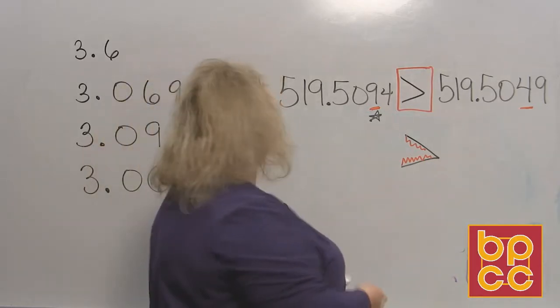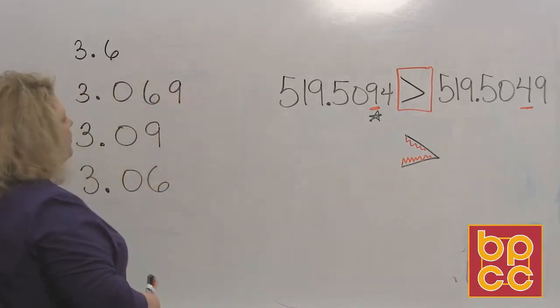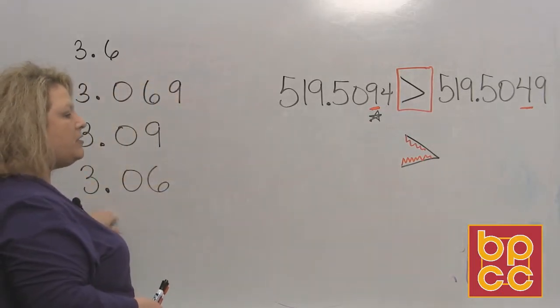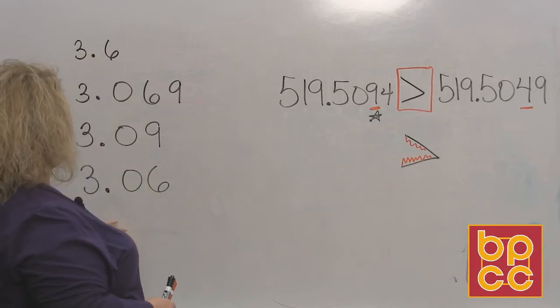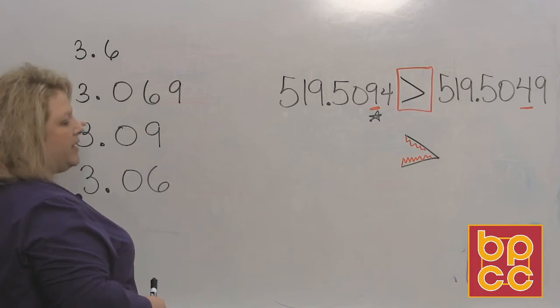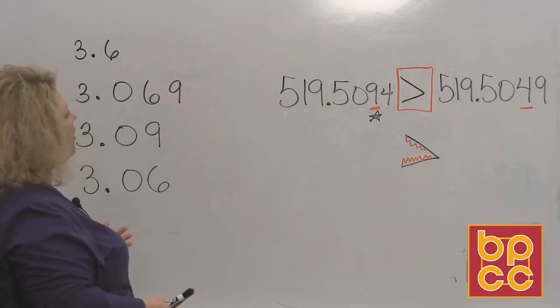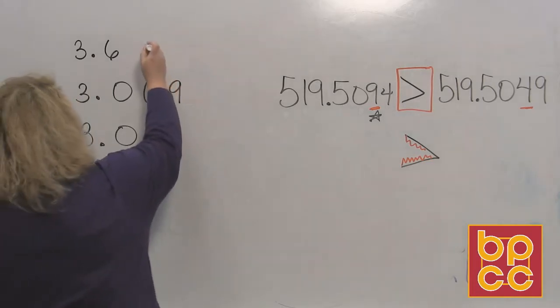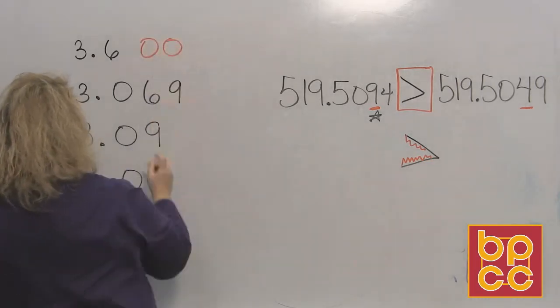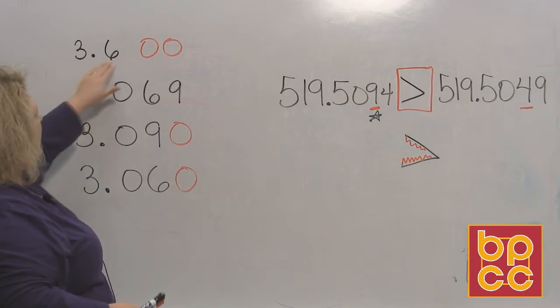Now the next thing we're going to do is put things in order, which is why we learn to compare numbers. When we put these in order, we're going to put them from the smallest number to the largest number. I have 3.6, 3.069, 3.09, and 3.06. First, make sure they all have the same number of digits behind the decimal, so I need to add two zeros here, one zero here, and one zero here to make sure they all have three numbers behind the decimal.